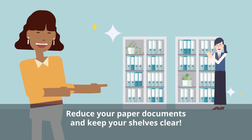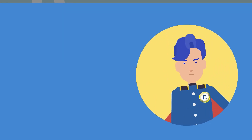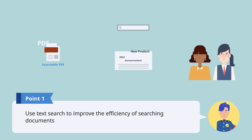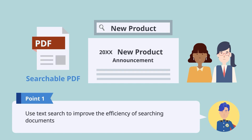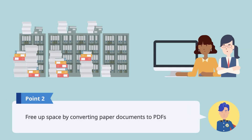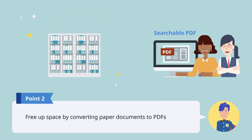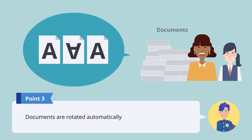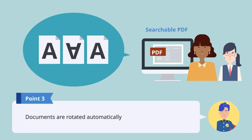Reduce your paper documents and keep your shelves clear of clutter. Text search allows you to quickly find the information you need. Free up space by converting paper documents to PDFs to give yourself a more comfortable office. Documents are automatically rotated, saving you time and effort.